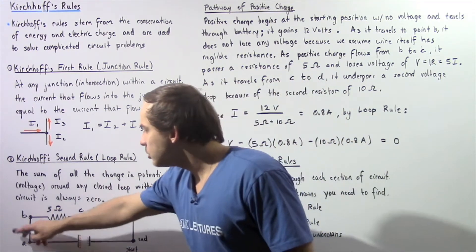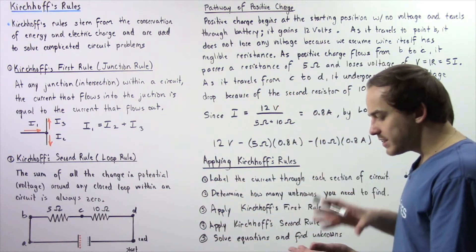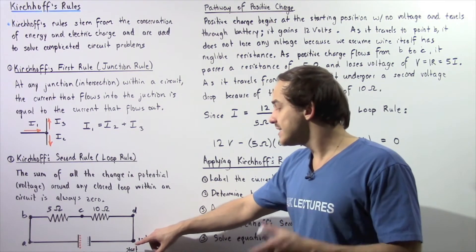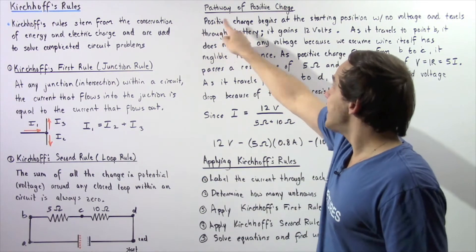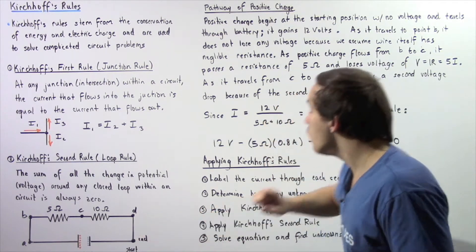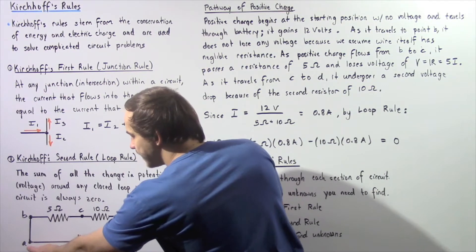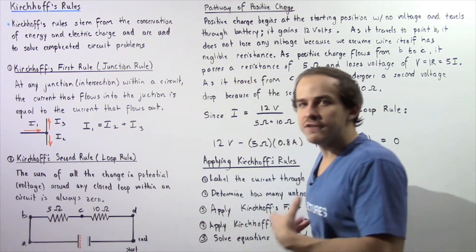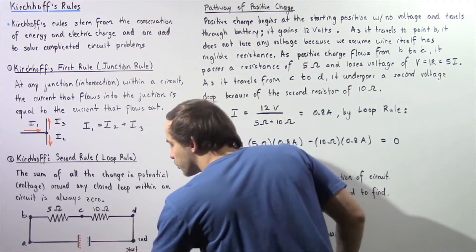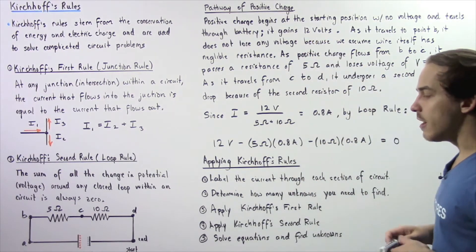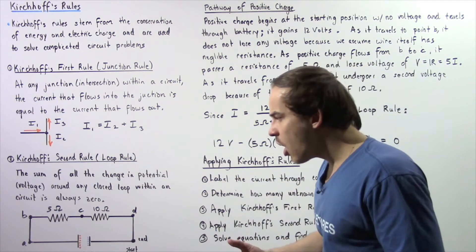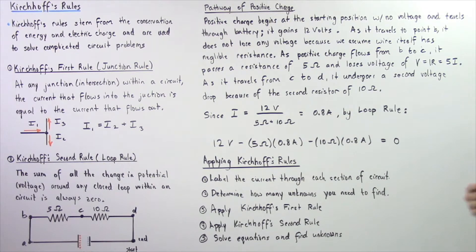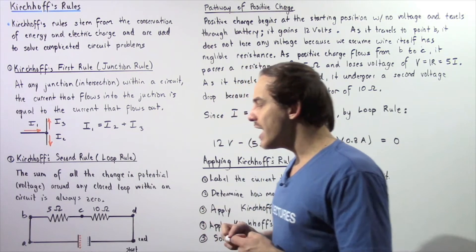Let's suppose we begin at this location and loop around back to that initial location, examining the flow of positive charge. Positive charge begins at the starting position with zero voltage and travels through the battery to position A, where it undergoes a positive change in voltage — gaining 12 volts. When the positive charge then flows from position A to position B, it does not lose any voltage because we assume the resistance in the wire is negligible.